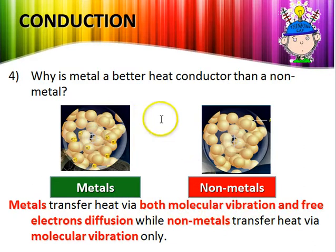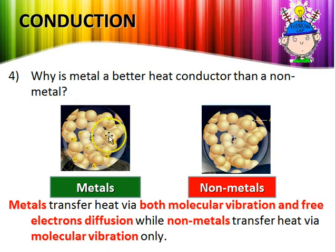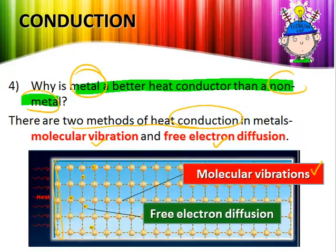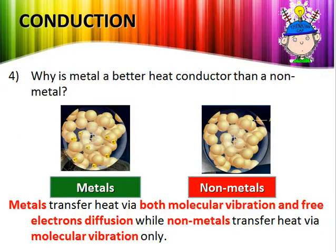This is a further visual explanation: non-metals have no free electrons, whereas metals have free electrons — shown here as the yellow particles — which diffuse through the material to aid in heat transfer. This is why metals are better conductors: they conduct heat via both molecular vibration and free electron diffusion. Next, we will go into the applications of conduction, but we'll stop here so the parts don't get too long.